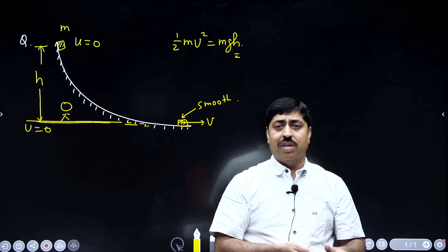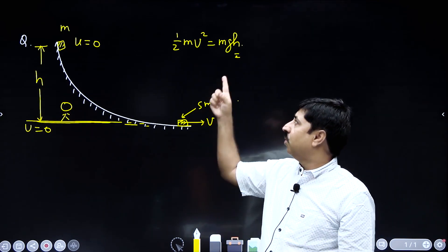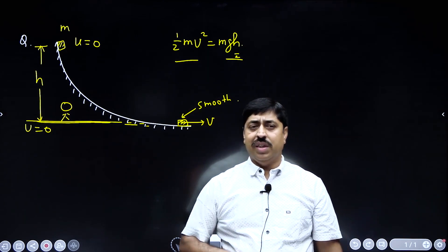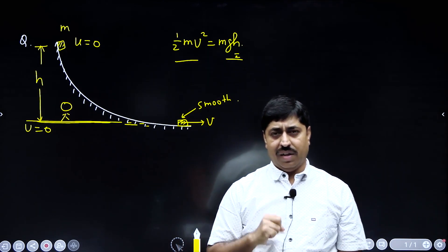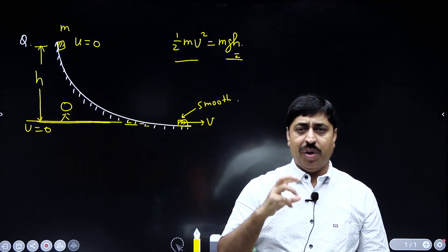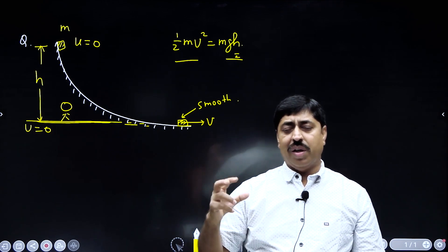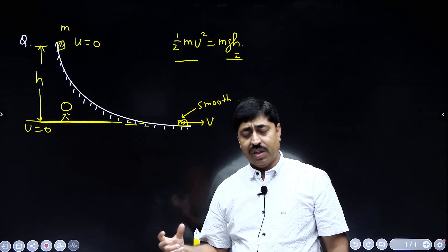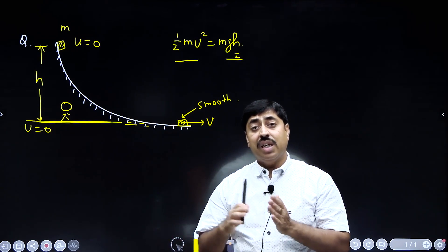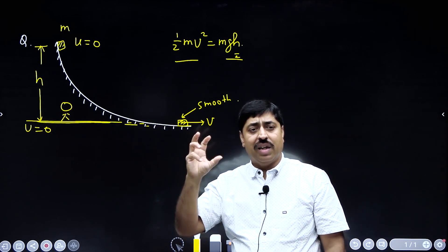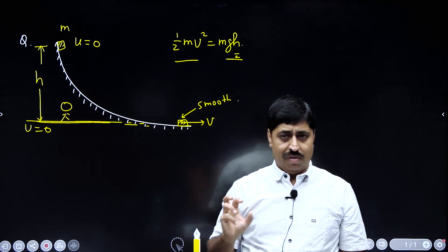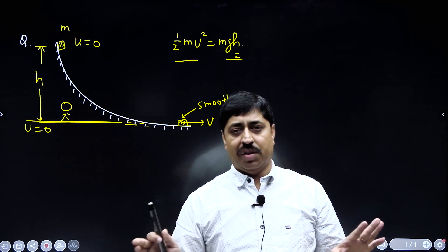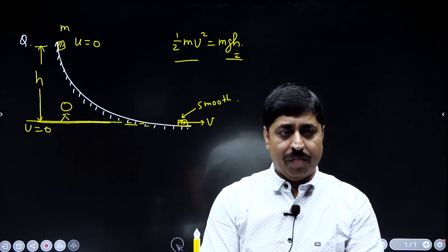According to the work-energy theorem, work done is equal to change in kinetic energy. So he may say that work done by gravitational force, which is mgh, is equal to the gain in kinetic energy of the block. Both explanations are equally valid.